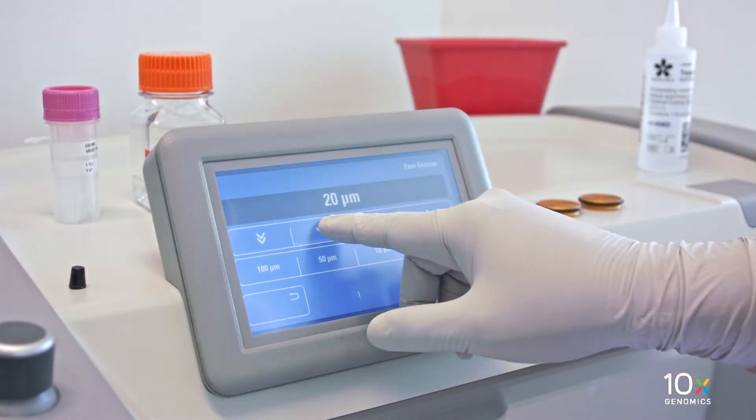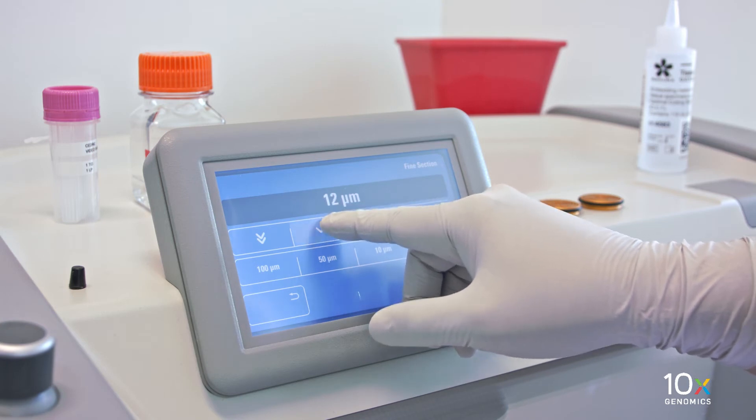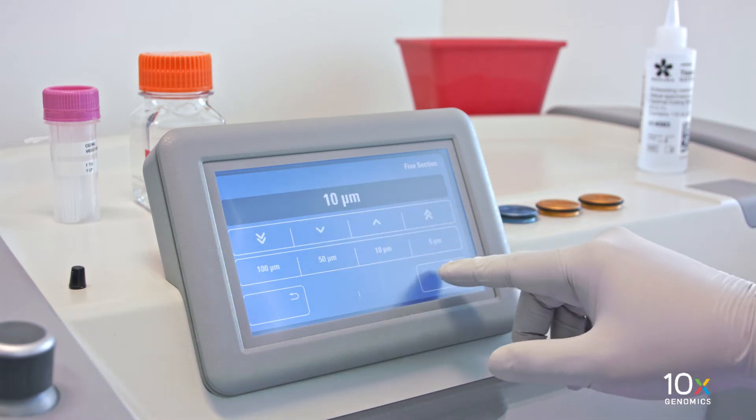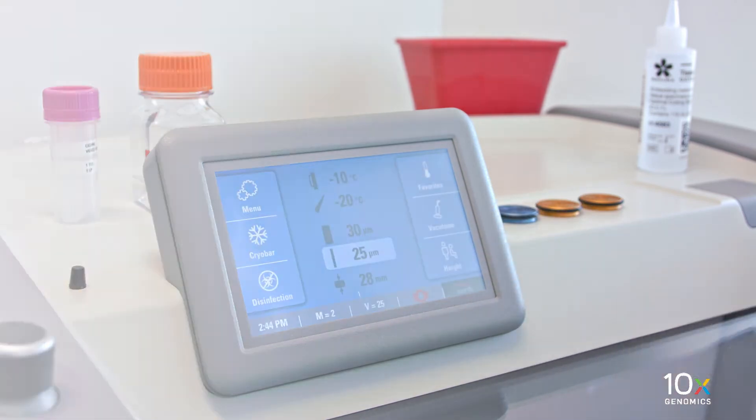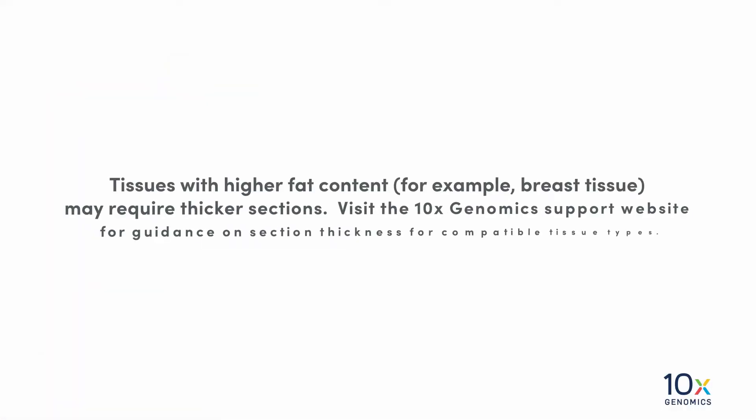Confirm the appropriate section thickness setting of the cryostat. Recommended section thickness is 10 microns for most tissue types. Tissues with higher fat content, for example breast tissue, may require thicker sections. Visit the 10x Genomics support website for guidance on section thickness for compatible tissue types.